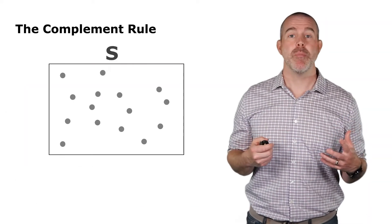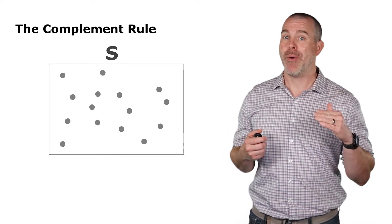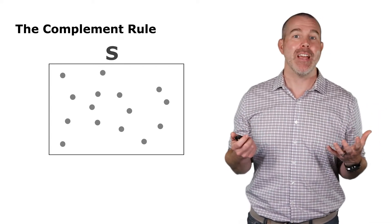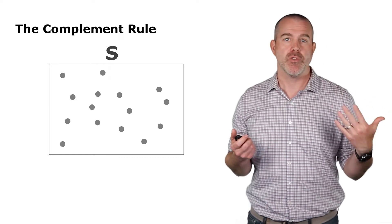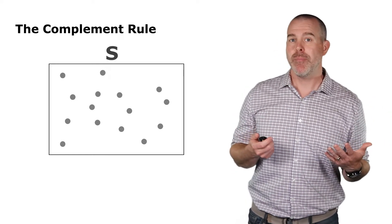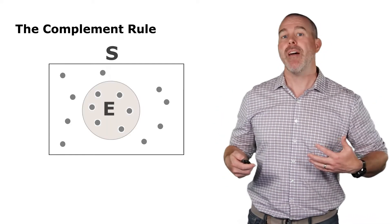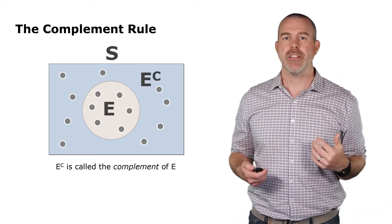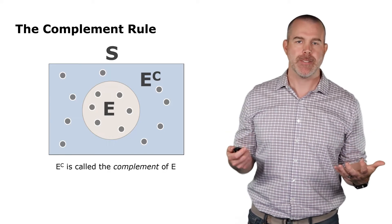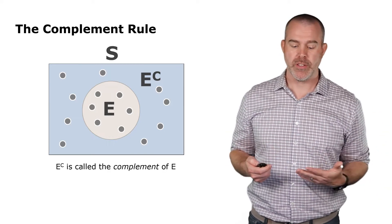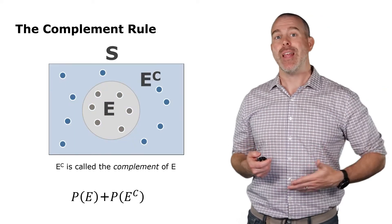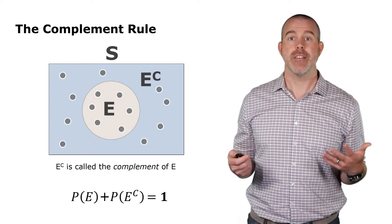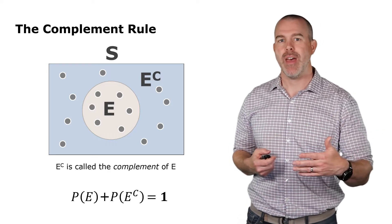The next rule is the complement rule. Be careful about the spelling — it's complement with an 'e', like complementary angles from geometry where they add up to 90 degrees. Here, the complement and the original event make up the whole sample space. If I have event E, the complement is denoted E with a superscript C — that's everything else. The probability rule is: the probability of E plus the probability of the complement equals one.